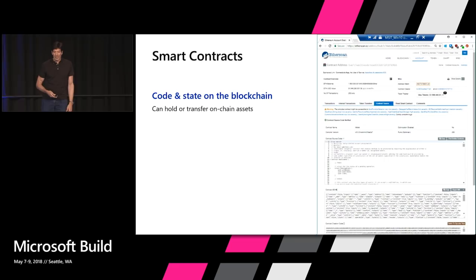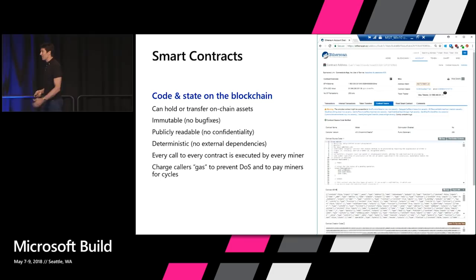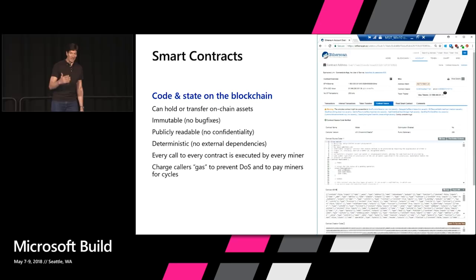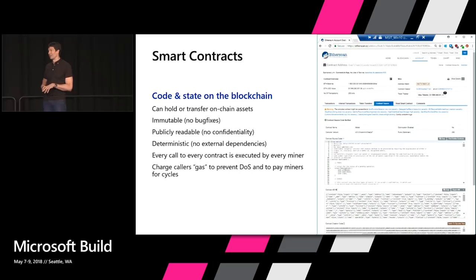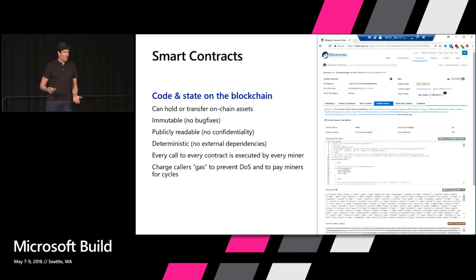There are some big challenges to writing smart contracts. Once you put one on the ledger, it's there — you can't change it. And if you have a bug in it, you're in trouble. There's been a high-profile case of the DAO — a distributed autonomous organization — that had a bug in their smart contract that allowed somebody to call it recursively and empty it of the ether assigned to that smart contract, giving it to themselves. They gave themselves tens of millions of dollars before this thing was shut down.